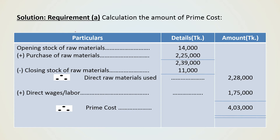Requirement A: calculate the amount of prime cost. We know that prime cost equals direct raw material used plus direct wages plus other direct expenses. Direct raw material used equals opening stock of raw materials plus purchases of raw materials minus closing stock of raw materials. So here: opening stock 14,000 taka plus purchases 2,25,000 taka equals 2,39,000 taka, minus closing stock 11,000 taka. So direct raw material used is 2,28,000 taka.